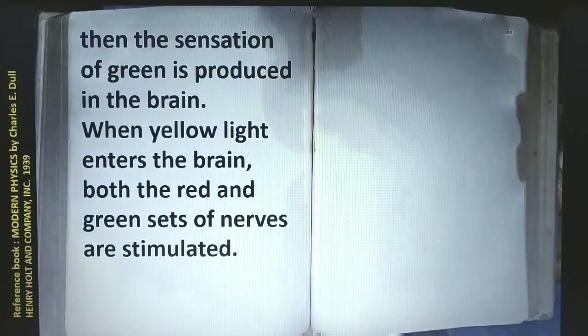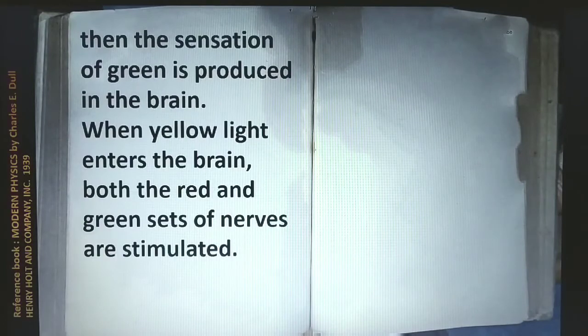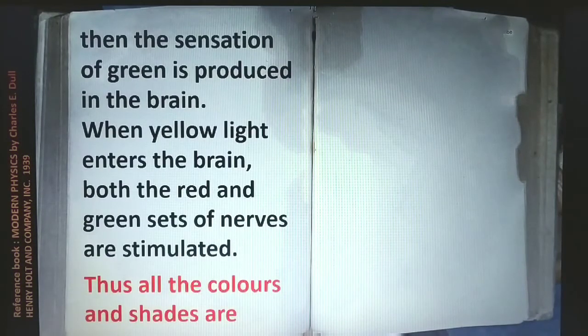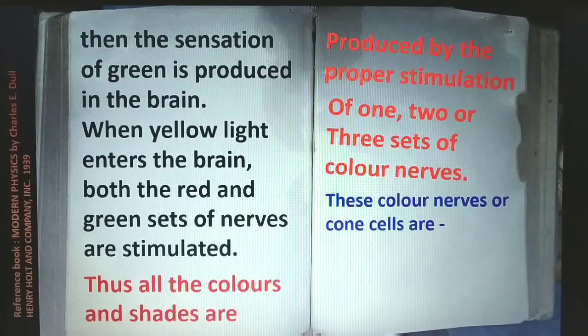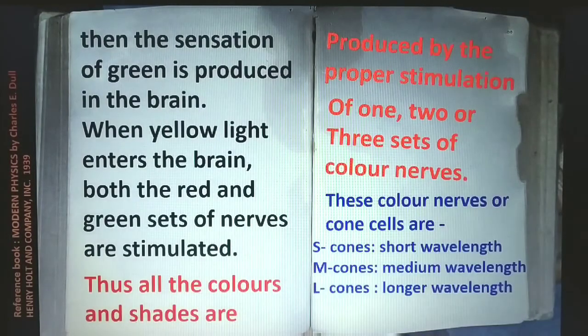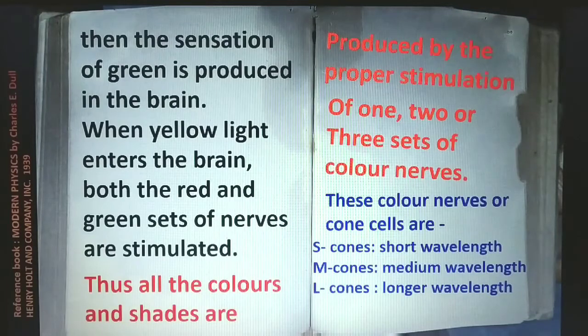Coming back to yellow light: when yellow light enters the eye, both the red and green sets of nerves are stimulated. Thus all colors and shades are produced by the proper stimulation of one, two, or three sets of color nerves. These color nerves — or cone cells — are: S-cones, sensitive to short wavelength; M-cones, sensitive to medium wavelength; and L-cones, sensitive to longer wavelength.